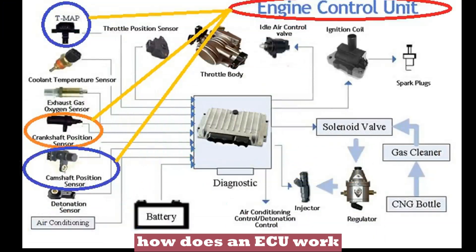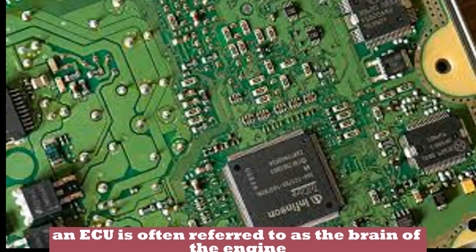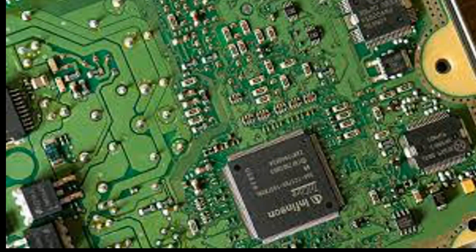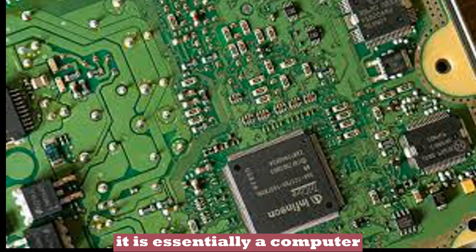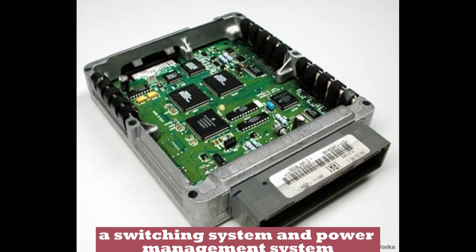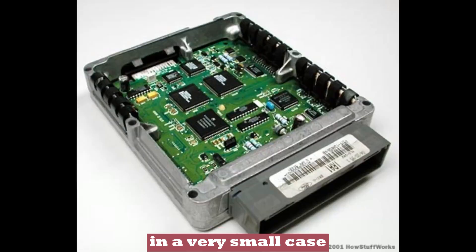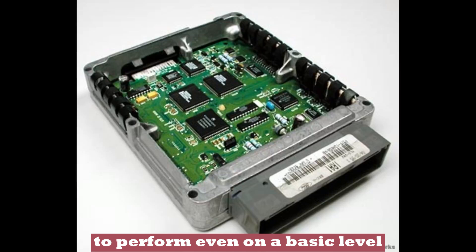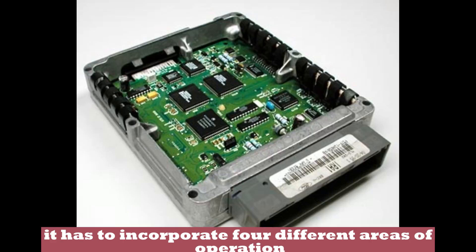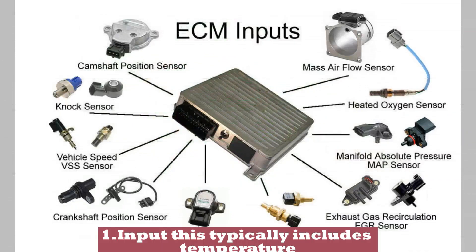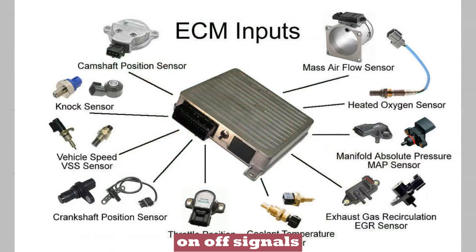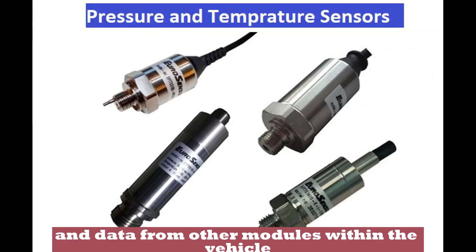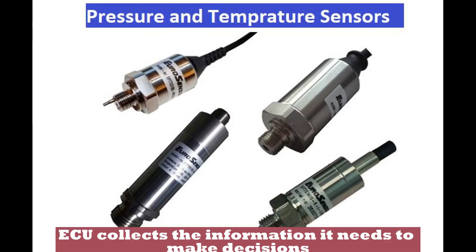How does an ECU work? An ECU is often referred to as the brain of the engine. It is essentially a computer, a switching system and power management system in a very small case. To perform even on a basic level, it has to incorporate four different areas of operation. Number 1: Input. This typically includes temperature and pressure sensors, on/off signals, and data from other modules within the vehicle, and is how an ECU collects the information it needs to make decisions.